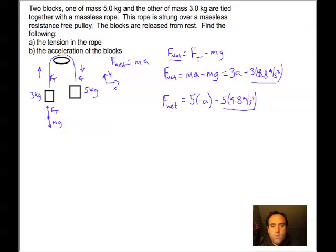And when you do that, it looks something like this. 3a minus 29.4 equals minus 5a minus 49. And this is kilograms meters per second squared. The same units for this 29.4.